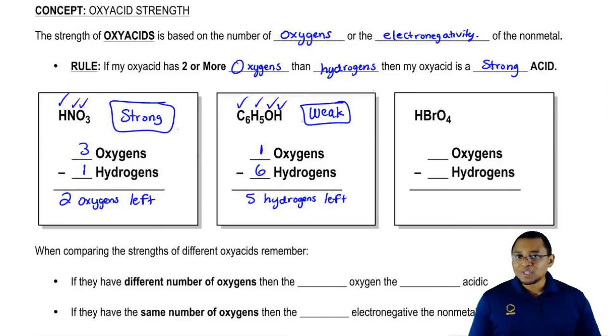So just remember, just because it has OH doesn't mean it's a base. You have to see what that OH is connected to. Is it connected to metals? If so, then it's a base. If it's connected to nonmetals, then it'll actually be an oxyacid.